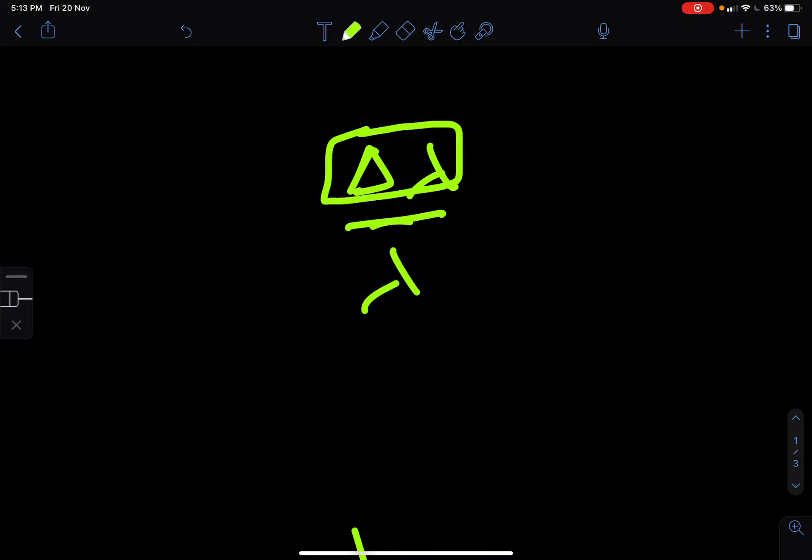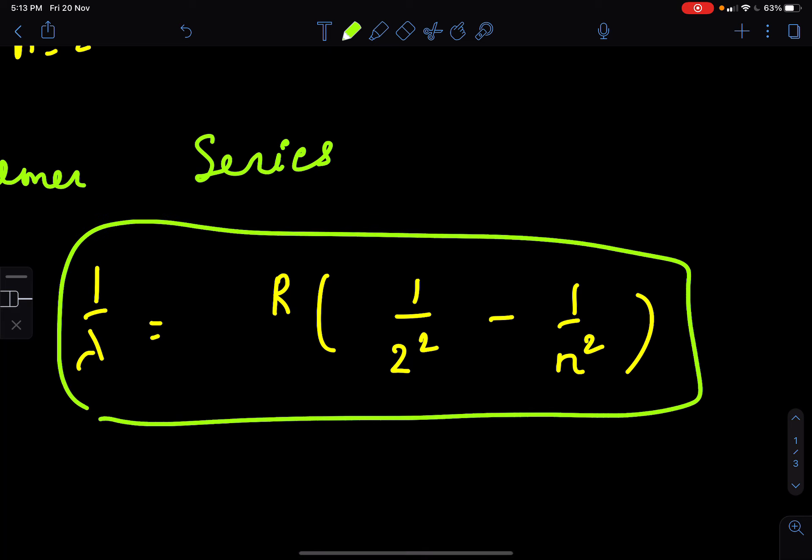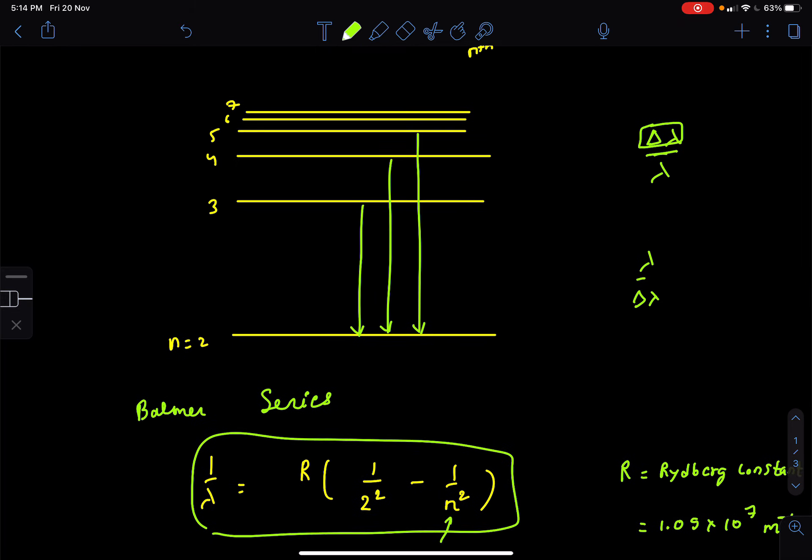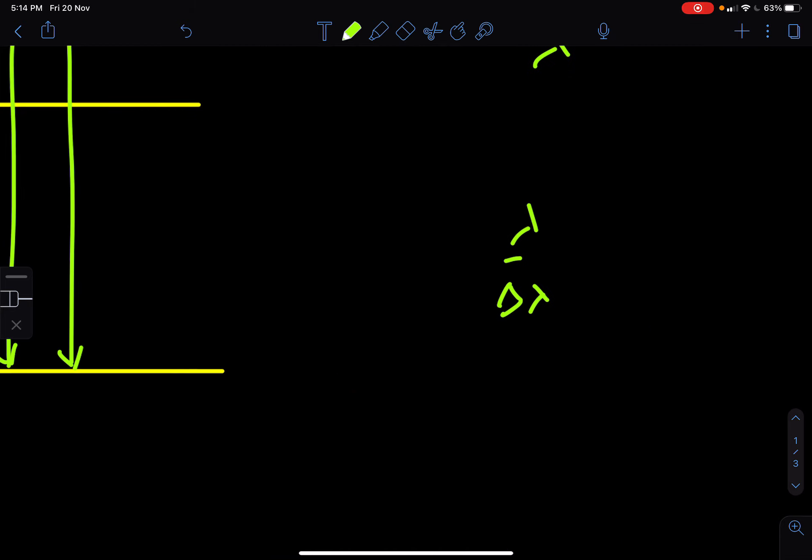Because this lambda is given by this formula. And whether you substitute here n or you substitute here n plus 1 makes little difference only. So as we keep on increasing n, the difference in the lambda that we observe when the electron comes from n to 2 or n plus 1 to 2, the difference in the lambda between these two transitions keeps reducing.